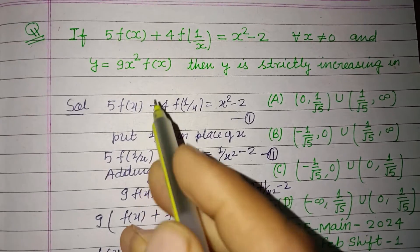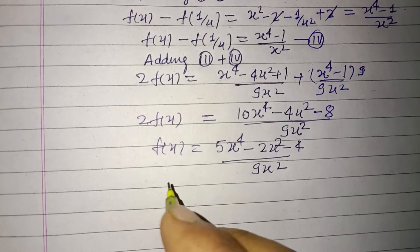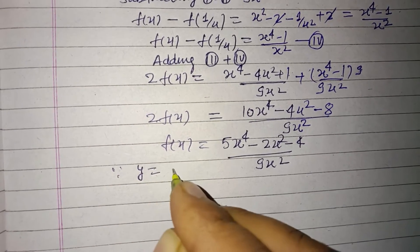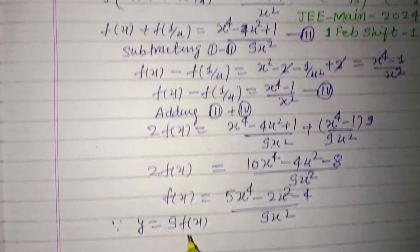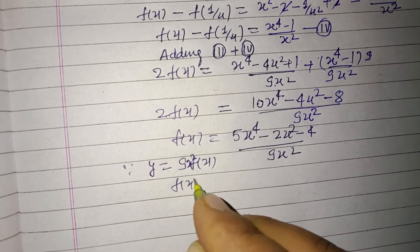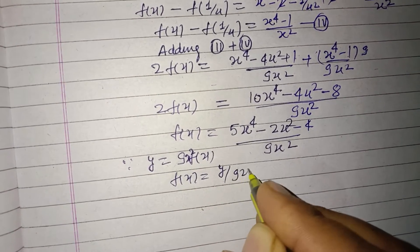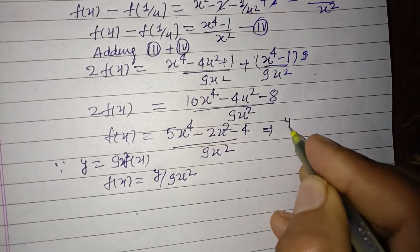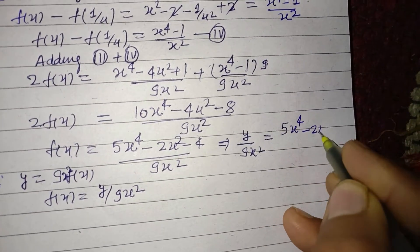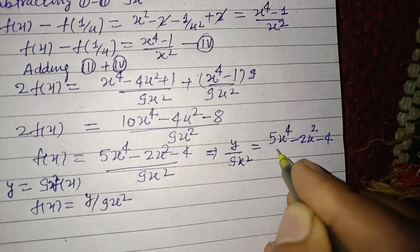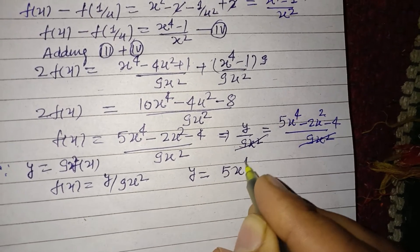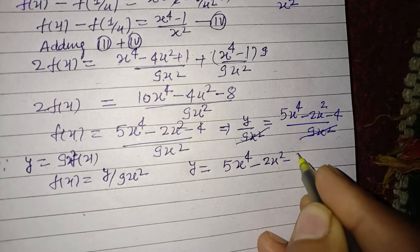The question says y = 9x²·f(x), so f(x) = y / (9x²). Substituting: y / (9x²) = (5x⁴ - 2x² - 4) / (9x²). The 9x² cancels on both sides, so we get y = 5x⁴ - 2x² - 4.